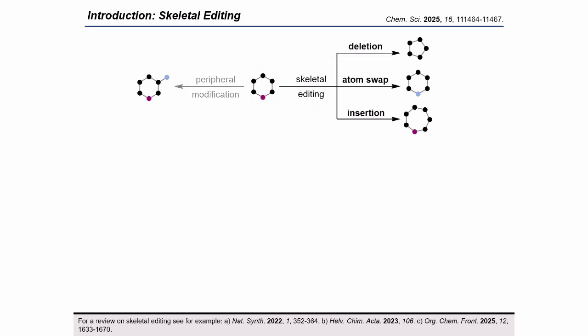Let's first start by introducing the concept of skeletal editing. Skeletal editing has emerged as an alternative to traditional peripheral editing. While traditional transformations alter the periphery of a structure of interest, core remodeling focuses on the skeleton of the molecule. In ring systems, three categories of skeletal editing can be distinguished: single atom insertions expand the ring system, single atom deletions contract it, and single atom swaps replace one atom for another.